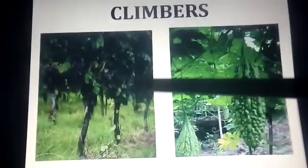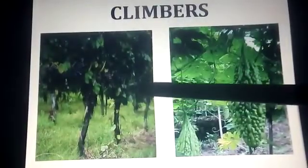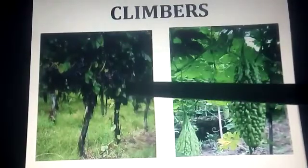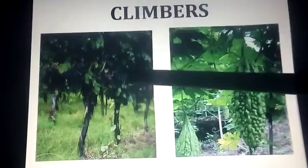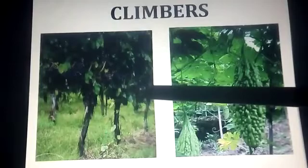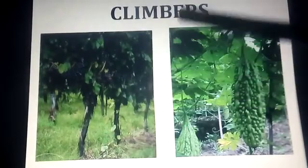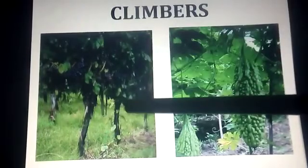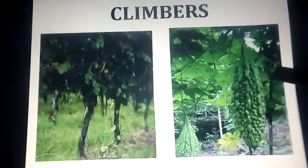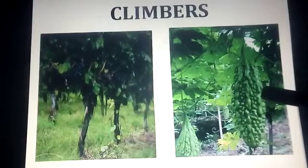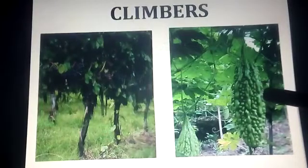What is this? Climbers. Climbers means plants that climb upon other things. Examples include grapes and bitter gourd. They wind around a stick or support and grow upward, spreading their leaves.